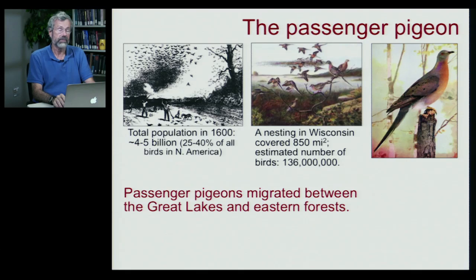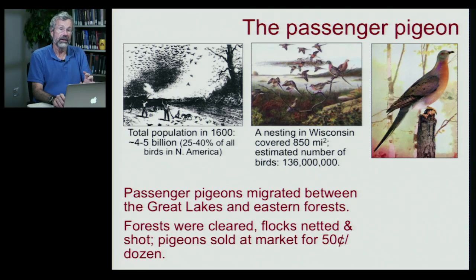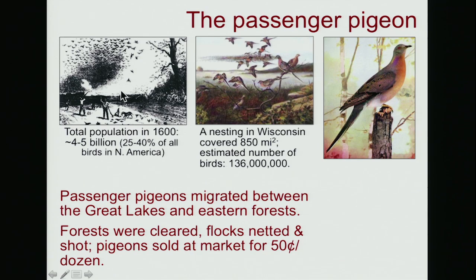During those days, the passenger pigeon migrated between the Great Lakes in the upper Midwest to the eastern forests in Virginia and Tennessee. But those forests were cleared, and people decided they could make money by netting the flocks and shooting them. In one image, somebody shoots into a black cloud of birds with a single shot, hitting multiple individuals. The pigeons were so abundant and so cheap they were sold at market for 50 cents a dozen. The species could not withstand that level of off-take.